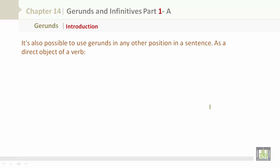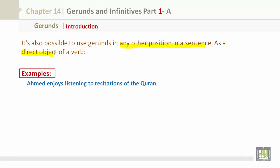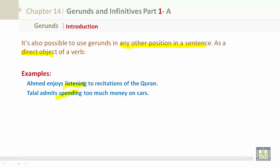It's also possible to use gerunds in any other position in a sentence as a direct object of a verb. For example: Ahmed enjoys listening to recitations of the Quran. Talal admits spending too much money on cars.